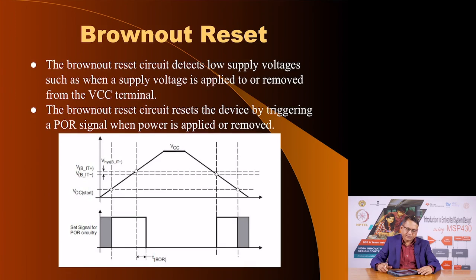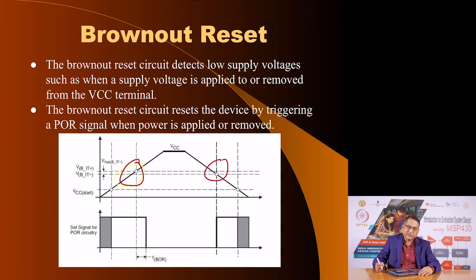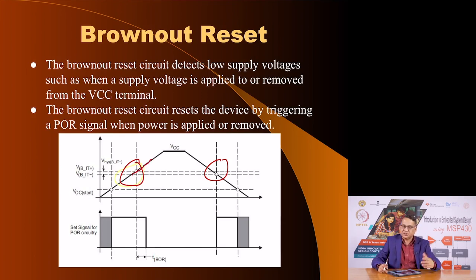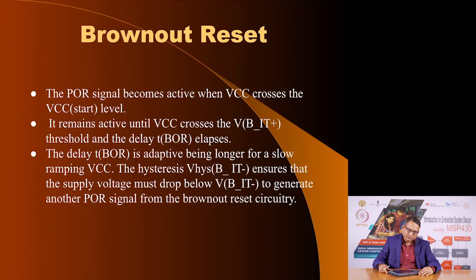A brownout reset is indicated when the voltage falls below a certain level, and the system is reset. Only when the voltage exceeds the threshold can the system start working again. Please go through the slide to understand how brownout reset works.